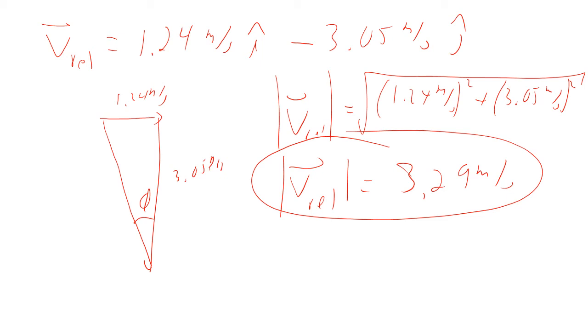The angle phi will be the arctangent of 1.24 meters per second over 3.05 meters per second. So that turns out to be 22.1 degrees. So to the receiver, it looks like that this person's closing at 22.1 degrees, and they're moving with a velocity of 3.29 meters per second.